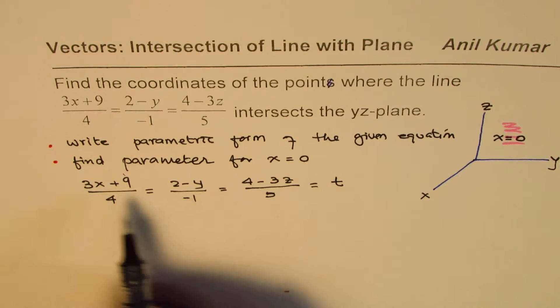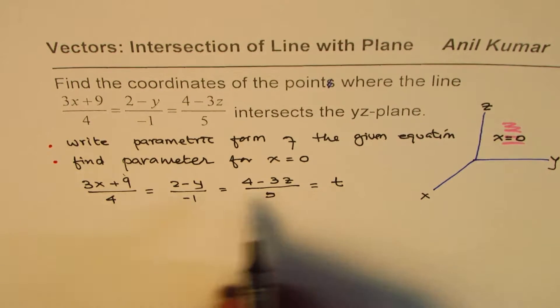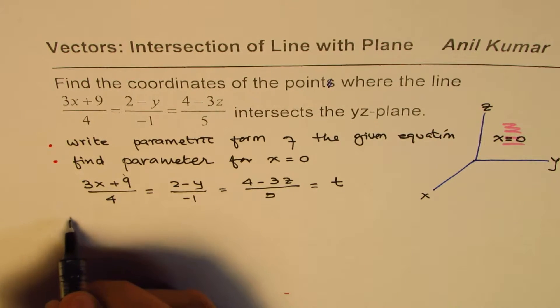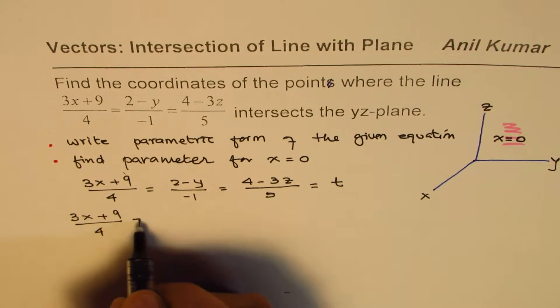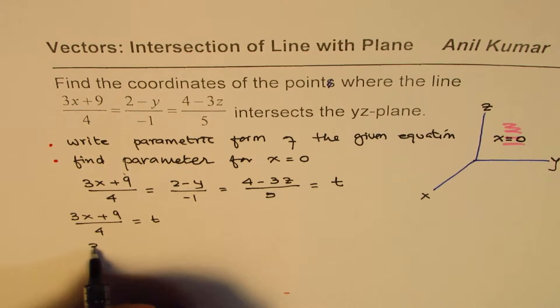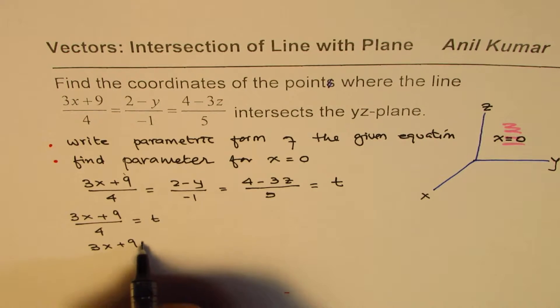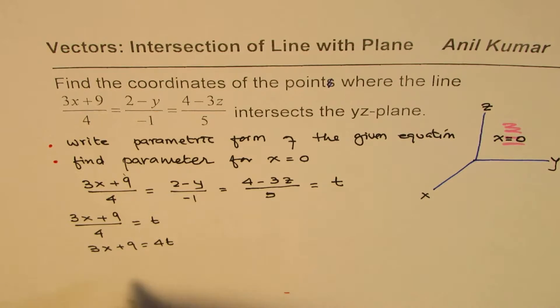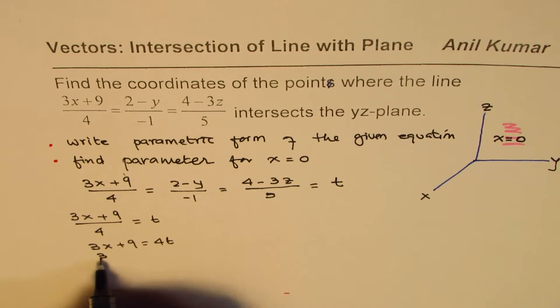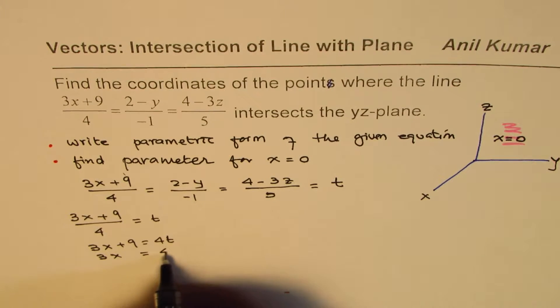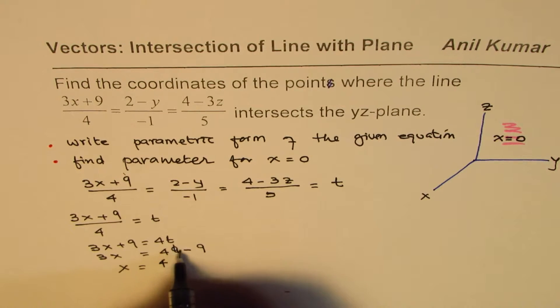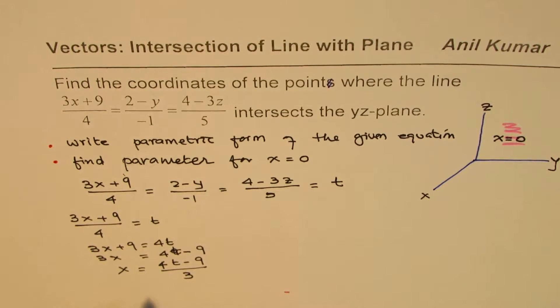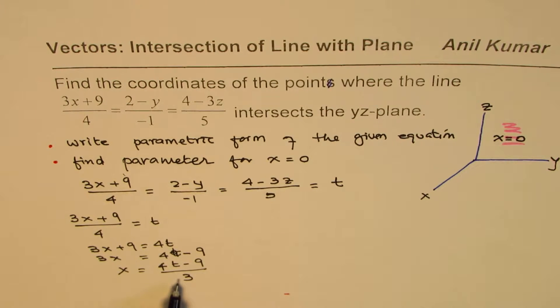Let's look into the first equation. We have the first equation as (3x+9)/4 = t. We can write this as 3x+9 = 4t or we can isolate x. So we can say 3x = 4t-9 and then divide by 3. So x = (4t-9)/3. That is how we can get parametric form.